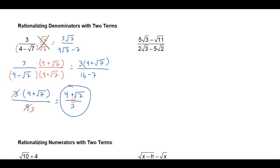My final answer for this problem would be 4 plus the square root of 7, all over 3. Notice that I did manage to get rid of the radical in the denominator. So let's do something similar on this next problem. I'd like to rationalize the denominator — I'd like to multiply by something that somehow gets rid of both of these radicals, and I can accomplish that by again multiplying by the conjugate.